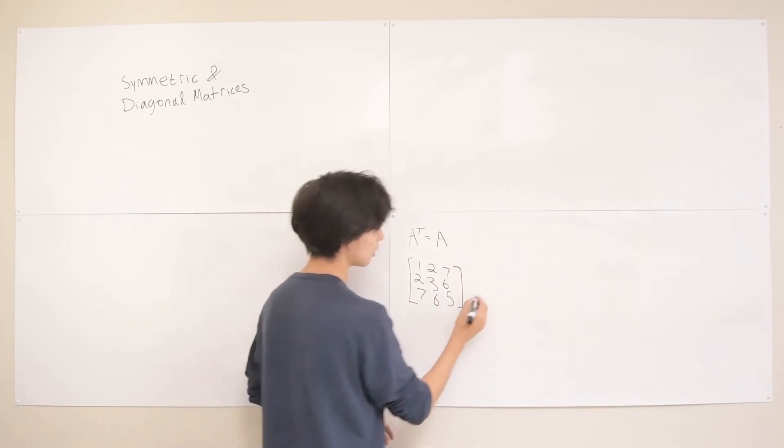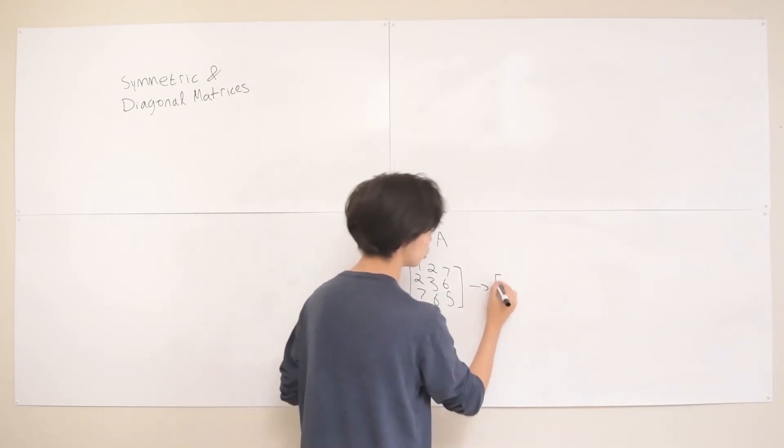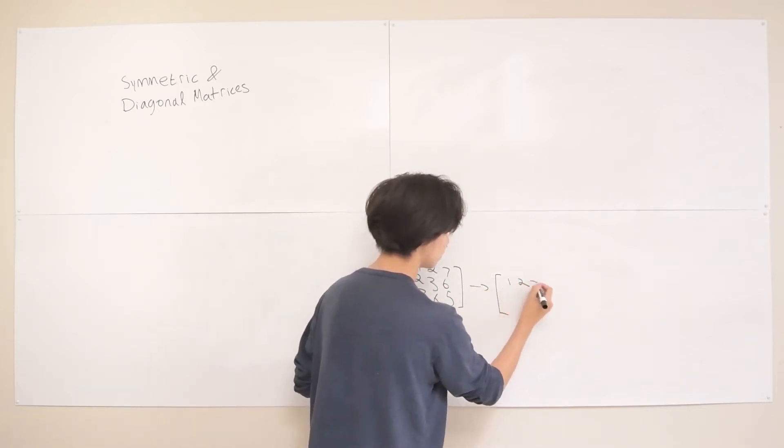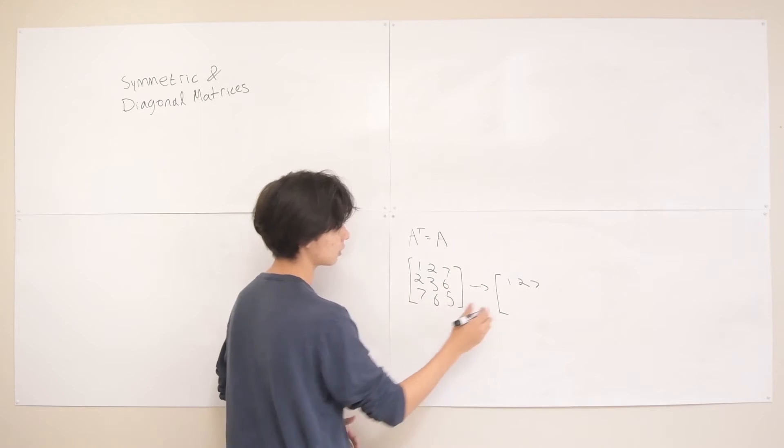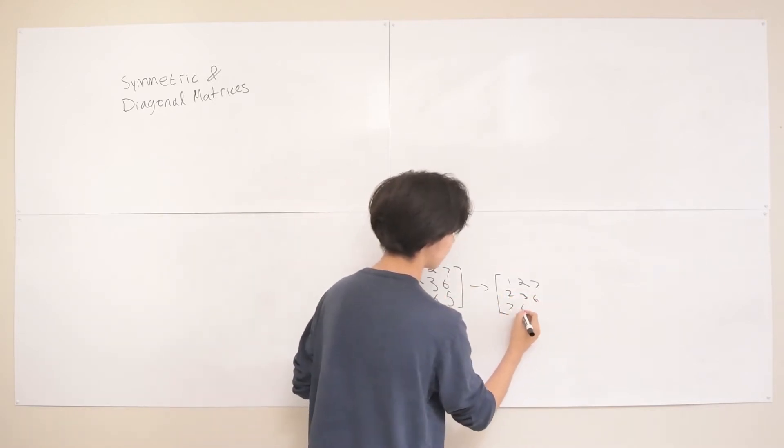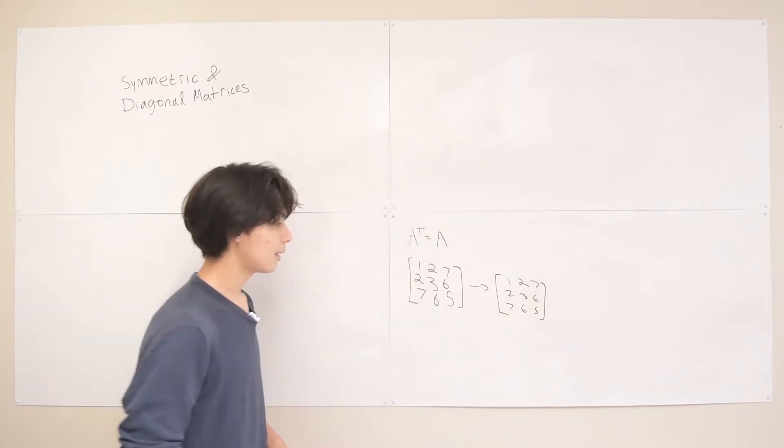And then let's transpose this just to double check. So this becomes the first row, so then our first row becomes 1, 2, 7. 2, 3, 6 becomes our second row. This becomes our third row, 7, 6, 5. And you can see those are exactly the same.